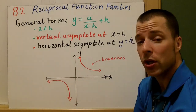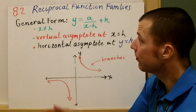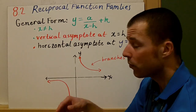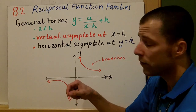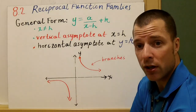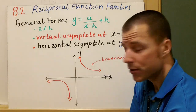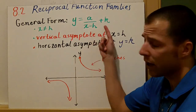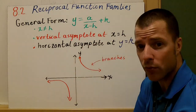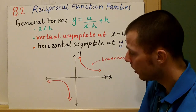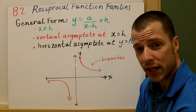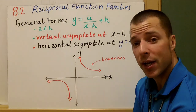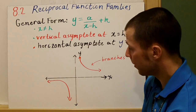We're going to look at two examples where h and k are zero, and then two examples where h and k are real numbers. When h and k are both zero and not shown, the vertical and horizontal asymptotes are at x equals zero and y equals zero.